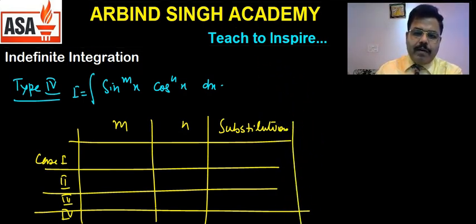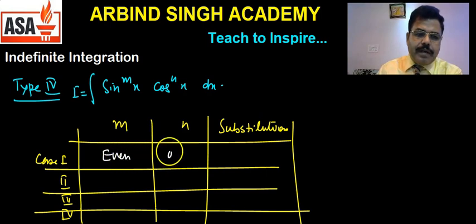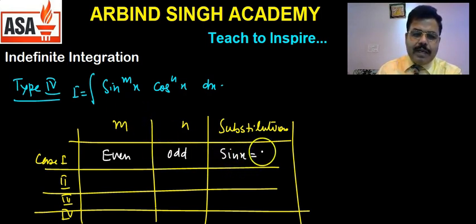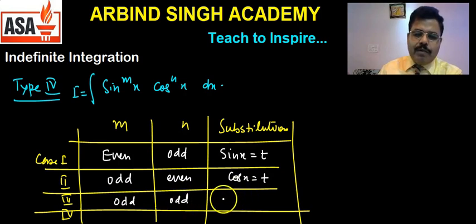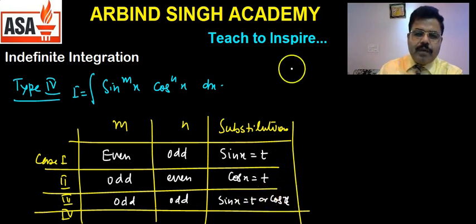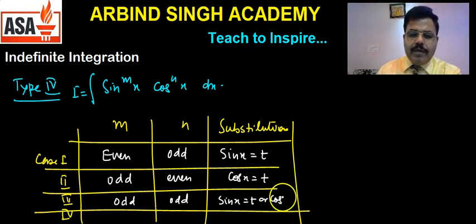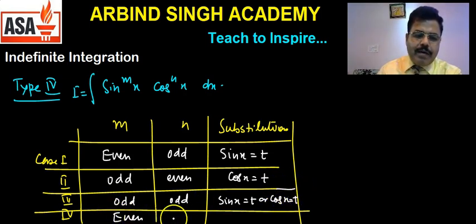इन चार cases में क्या substitution होनी चाहिए यह हम सीखते हैं। जब m even हो और n odd हो तो even function है उसको t put कर लेना चाहिए — यानि sin x को t put करेंगे। जब m odd हो और n even तो cos x को t put करना चाहिए। जब दोनों ही odd हो तो जिसका power ज़्यादा हो उसको t put कर सकते हैं।